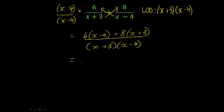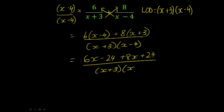So that's just a bit of a shortcut. Let's expand the brackets now. So now I've got 6x minus 24 plus 8x plus 24 all over (x + 3) times (x - 4).